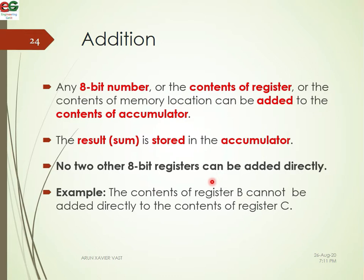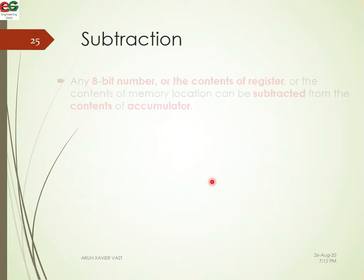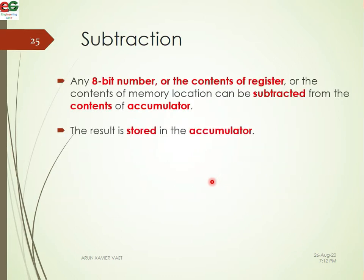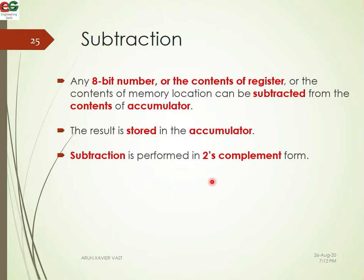Next is subtraction. For subtraction, the 8085 performs two's complement — as in digital electronics — to carry out the subtraction operation. For example, C minus B is performed using two's complement of the subtrahend and then adding to the accumulator.